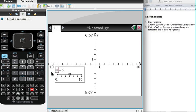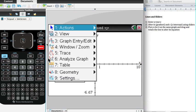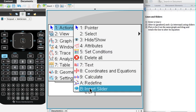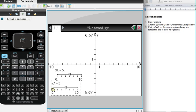Now that's just a slider for m. I also want to be able to alter c, so I'm going to go back to menu and repeat those steps. Actions, insert slider, action one b, insert slider. And there's my second slider. I'll change that variable to c.